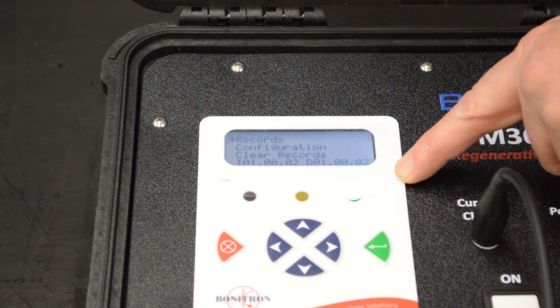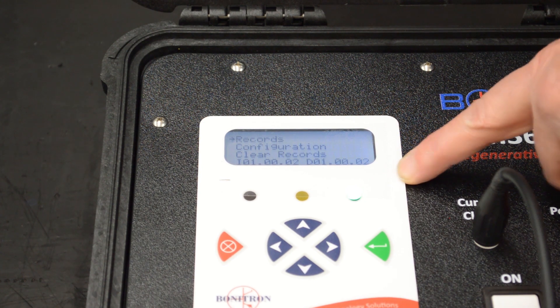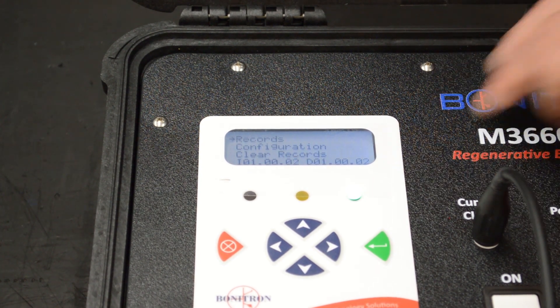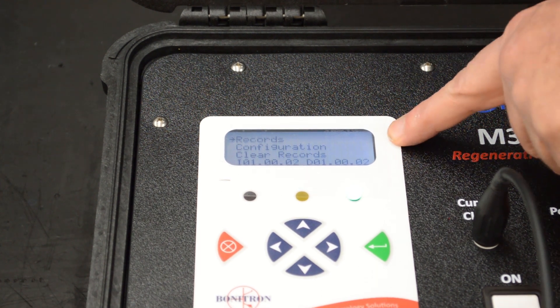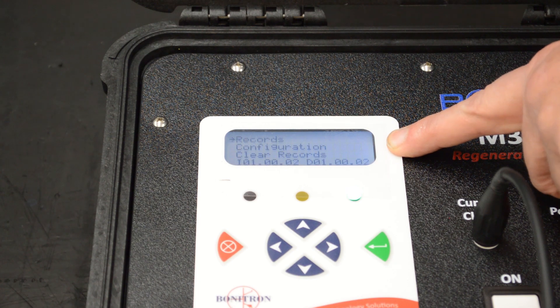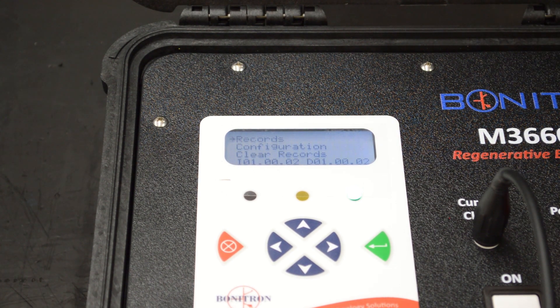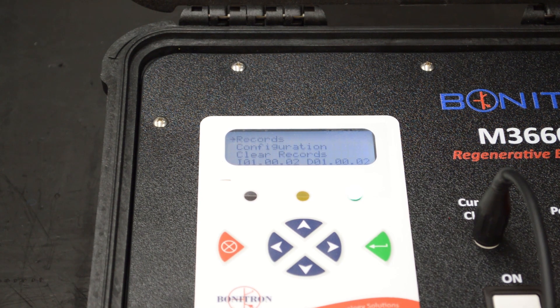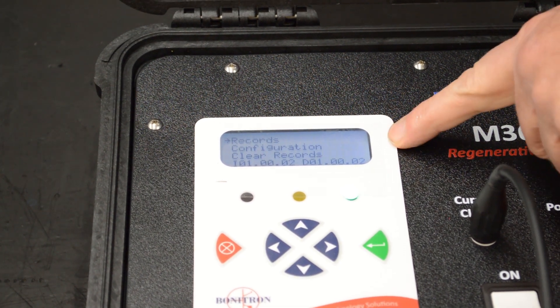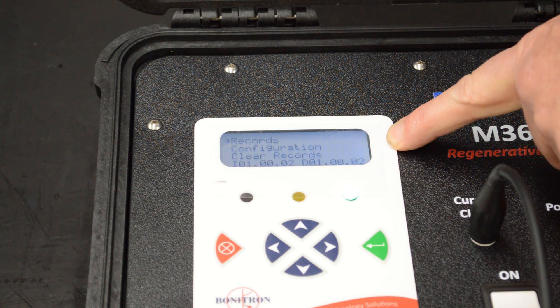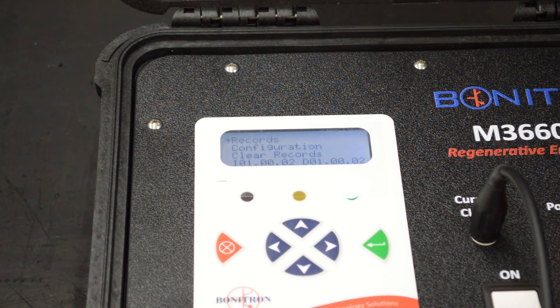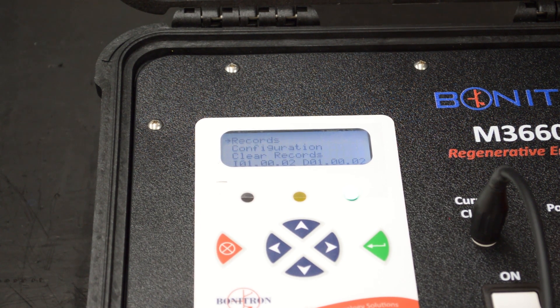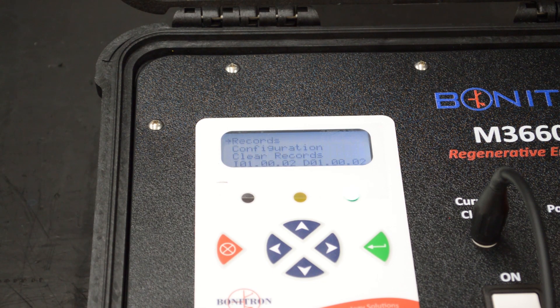Now we're going to talk about the menu and the display and the different menus you have. When you first power up, hit the on button and you're going to have three menus. One that shows you records, and this is a record of the regenerative energy and the events that you do when you're monitoring the DC bus for regen. And then you have a configuration which sets this up and configures it. And then you also have to where you can clear records and start all over again. This will monitor one event and tell you what the one event regen energy was, and it will also monitor over a period of time cumulative regen energy from the total events.